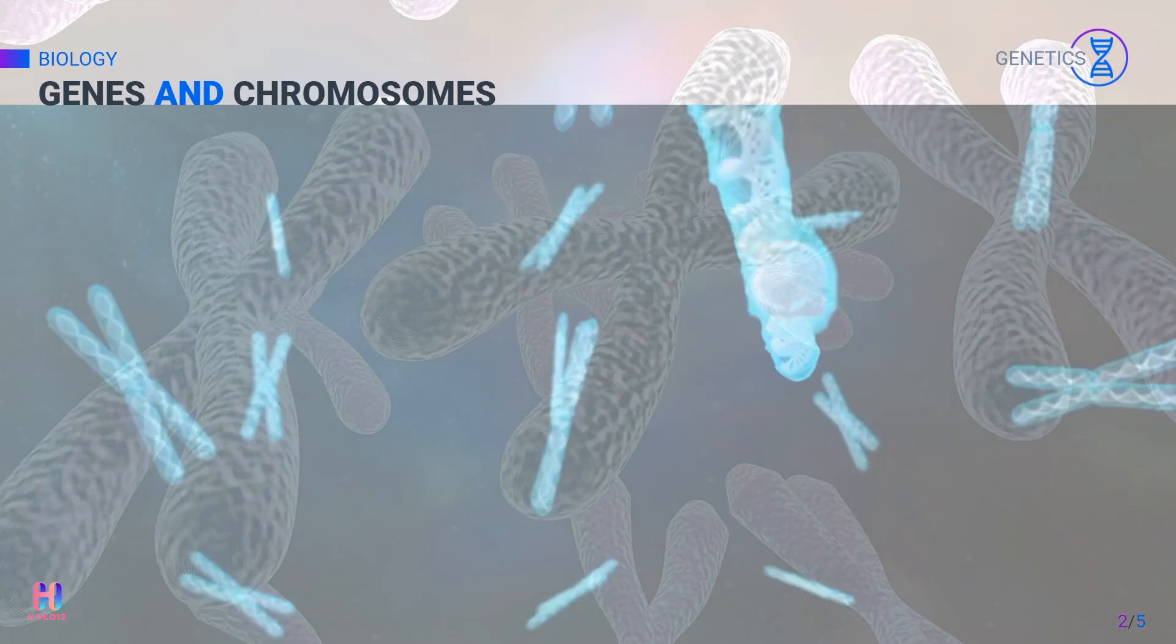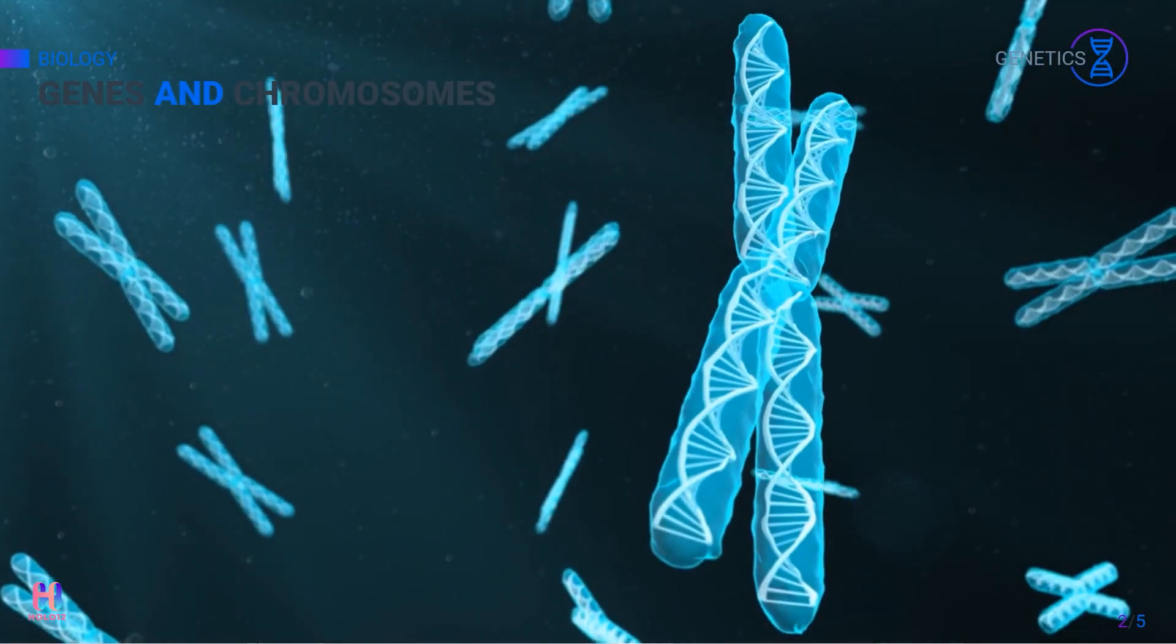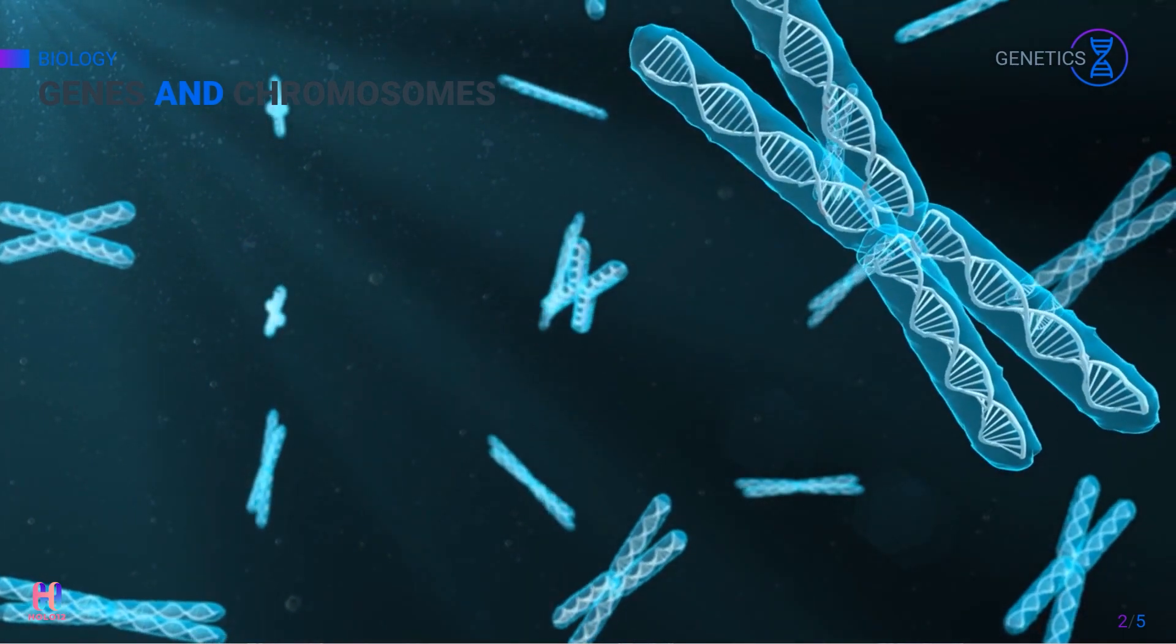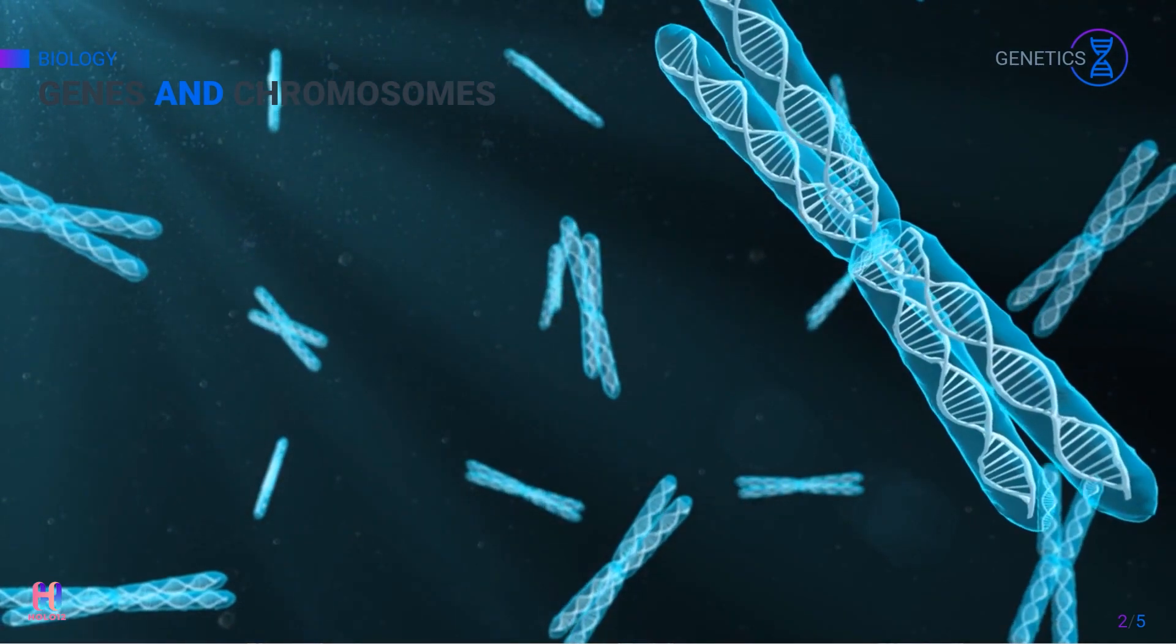Genes and chromosomes. Take a look at this chromosome, it looks like two threads tied by a knot in the center. These are two strands that are connected to each other at the centromere.